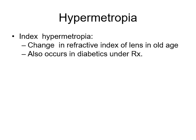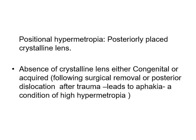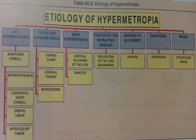Index hypermetropia involves a change in the refractive index of the lens in old age, and also occurs in diabetics under treatment. In diabetics, because of osmotic imbalance, the lens changes as the patient's blood sugar fluctuates, causing refractive error change when diabetes is not in control. Positional hypermetropia results from a posteriorly placed crystalline lens. Absence of crystalline lens, either congenital or acquired — following surgical removal or posterior dislocation after trauma — leads to a condition called aphakia, which is a state of high hypermetropia.